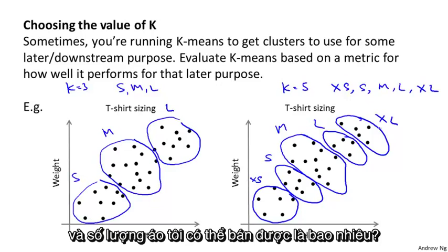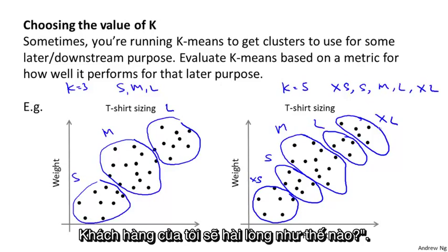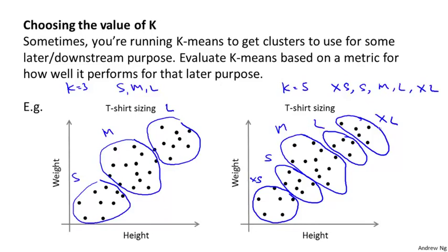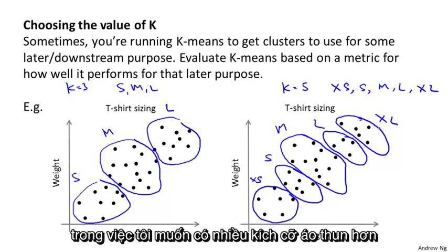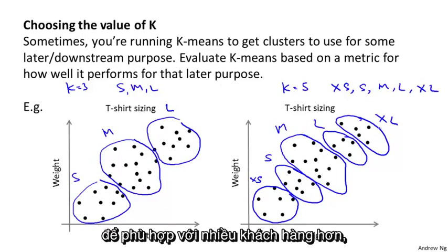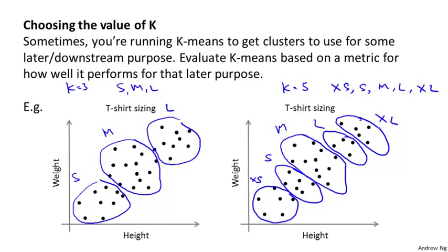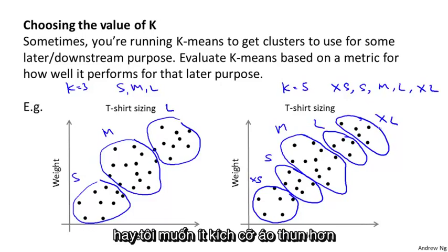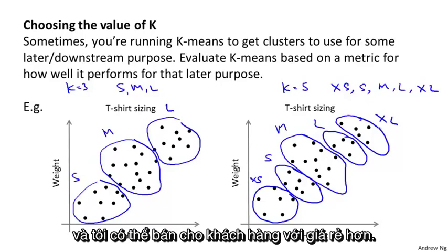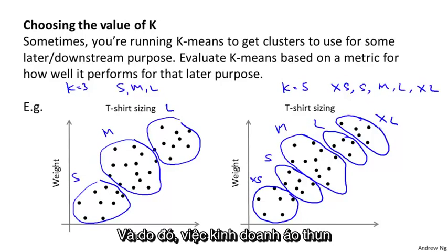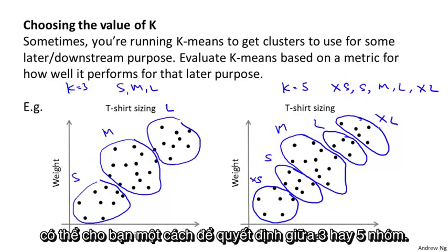And what really makes sense from the perspective of the t-shirt business in terms of whether I want to have more t-shirt sizes so that my t-shirts fit my customers better? Or do I want to have fewer t-shirt sizes so that I make fewer sizes of t-shirts and I can sell them to the customers more cheaply? And so it's the t-shirt selling business that might give you a way to decide between three clusters versus five clusters.